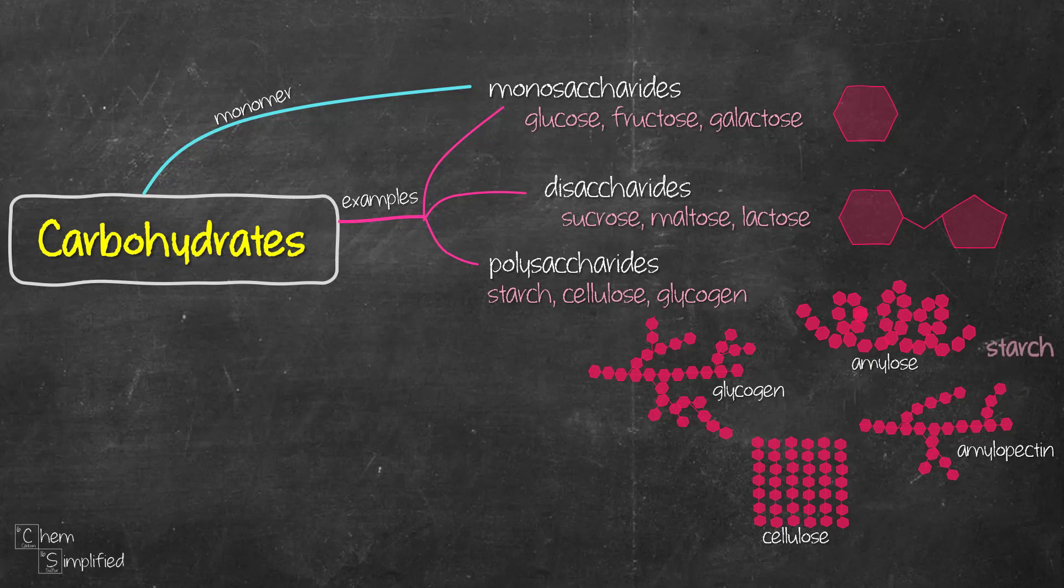Starch consists of millions of amylopectin and amylose molecules. The function of carbohydrates include providing us with energy. Bread, pasta, potatoes, oats, these are all food sources of carbohydrates that gives us energy.